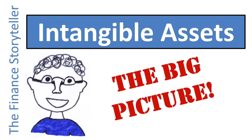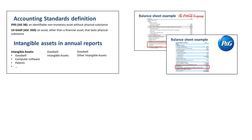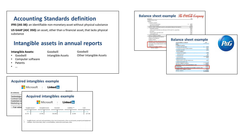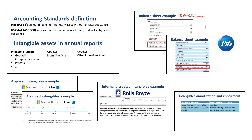What is in the asset category of intangible assets on the balance sheet? This video provides you with the big picture on intangible assets. We start off with the definition of intangible assets, review examples of companies with a significant amount of intangible assets on their balance sheet, walk through an example for acquired intangibles, discuss internally created intangibles, and end with intangible assets amortization and impairment.